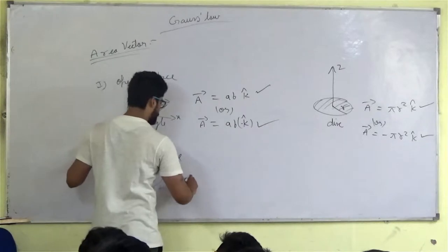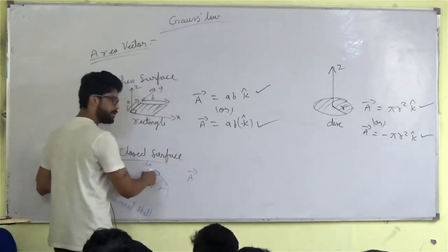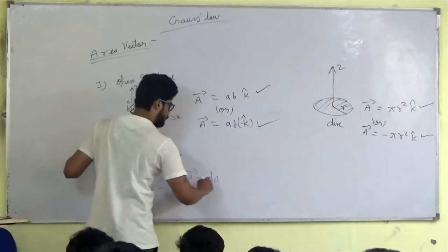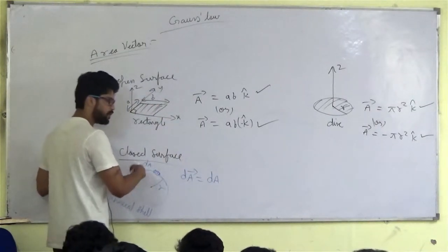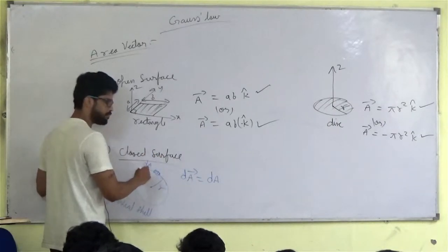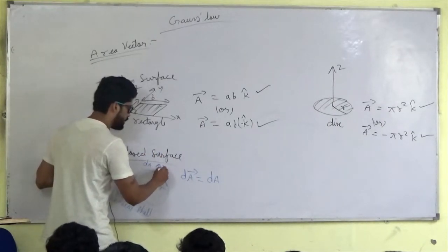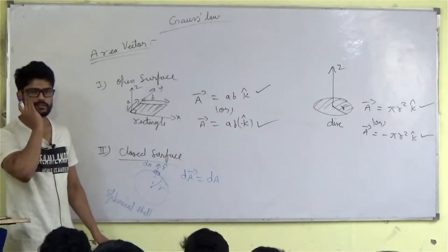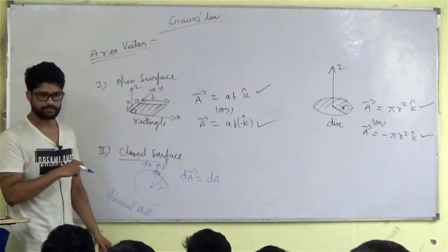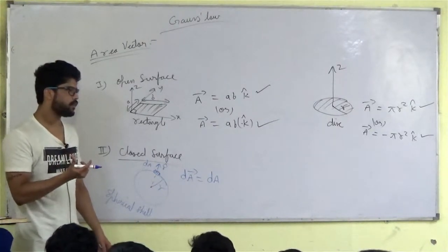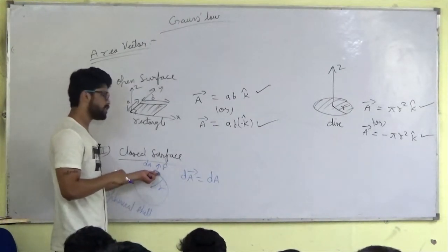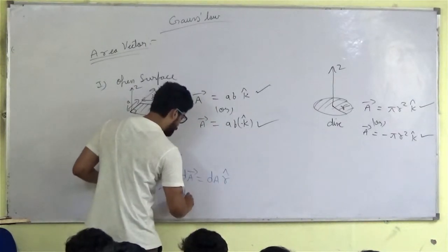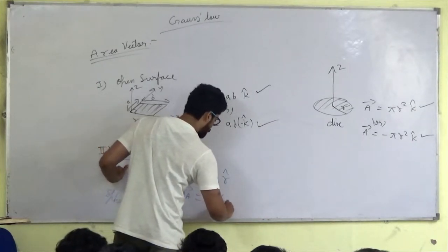Now you have to write this direction. Now the question is, what do you do? Area vector. If you have a small area, it's dA. What is dA vector? Surface area is dA. And what do you do now? R-cap or minus R-cap? So R-cap or minus R-cap. Because the formula that you write, according to what you should do, that magnitude should be the area, and direction should be perpendicular. Just perpendicular.